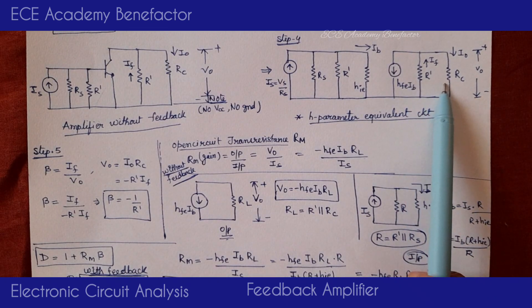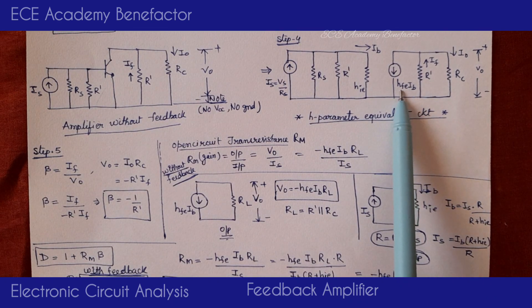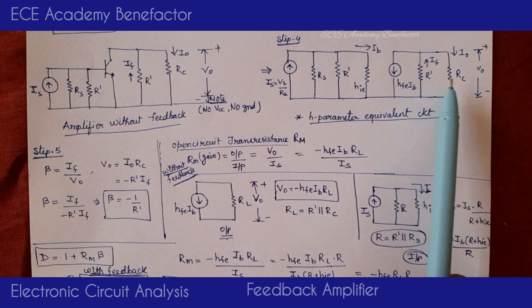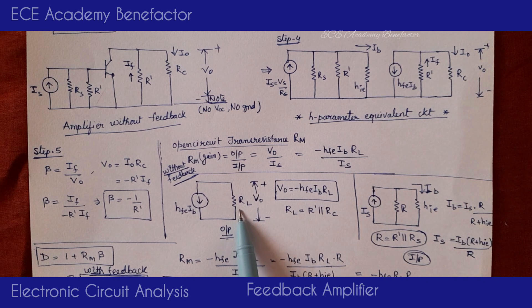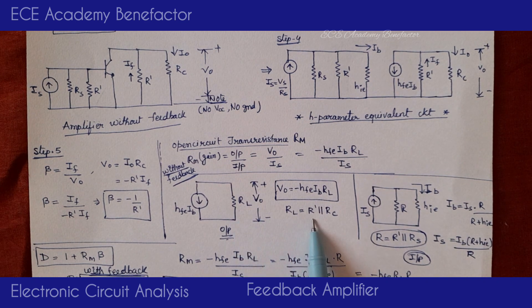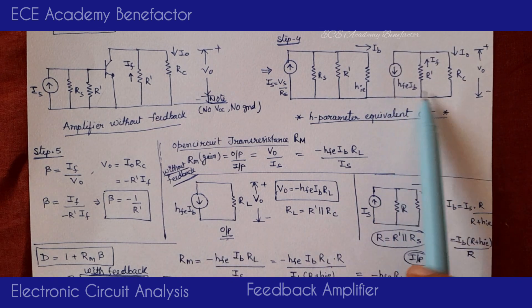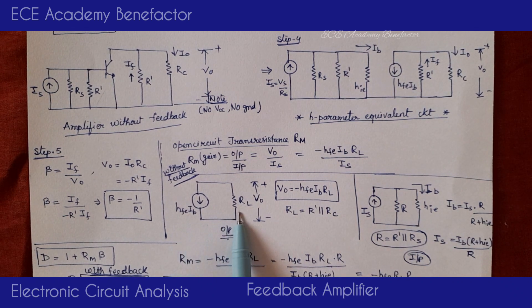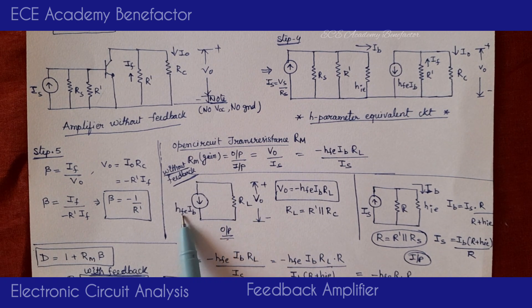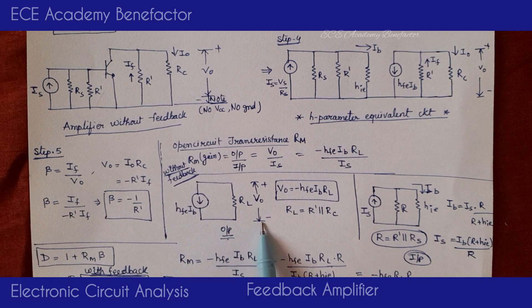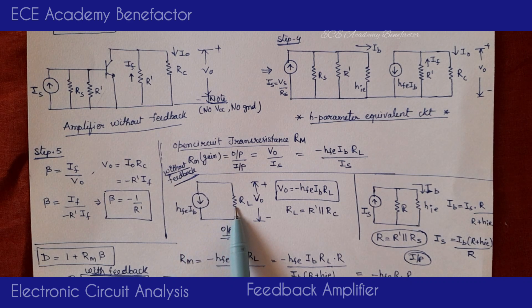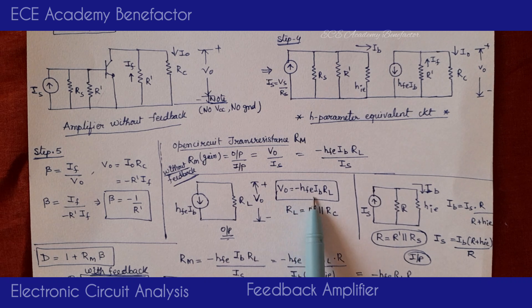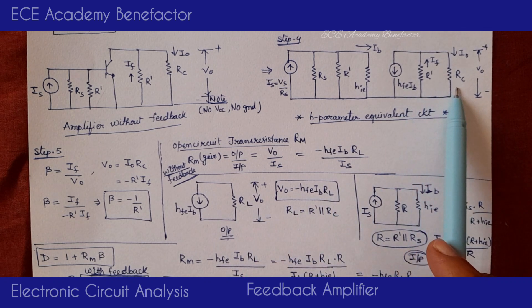Looking at the output circuit, we have HFE·IB at the output side. Replacing R' and RC with a combined resistor RL, where RL = R' ∥ RC, we get V0 = −HFE·IB·RL. On the input side, Rs ∥ R' is replaced by resistor R, giving the circuit Is, R, HIE. The current IB = IS × R / (R + HIE).